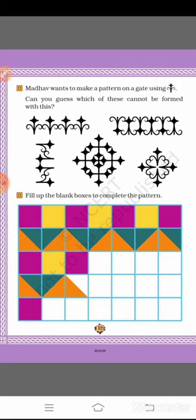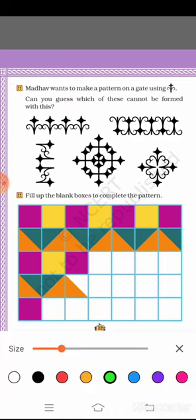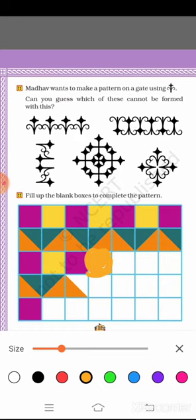Fill up the blank boxes to complete the pattern. Firstly, here you see pink and yellow boxes are filled. In the first line: pink, yellow, pink, yellow — that color pattern is followed. Next, half of it is colored using two colors. In the third line: pink, yellow, pink — so what will the next color be? Yellow. Then the next color will be green.